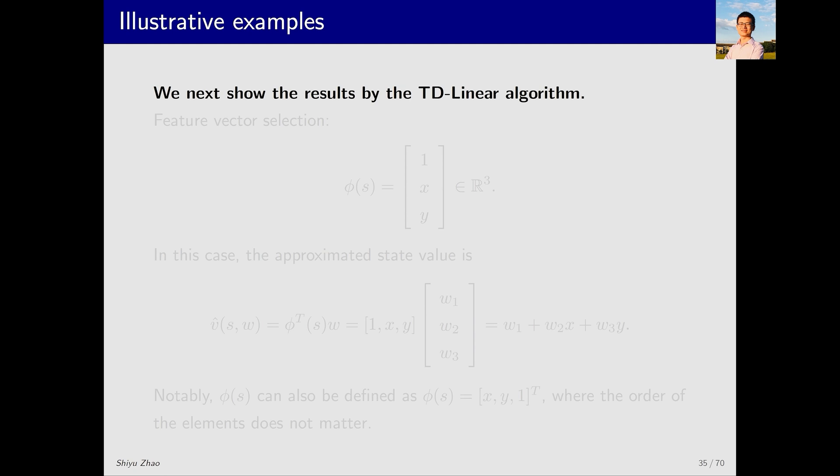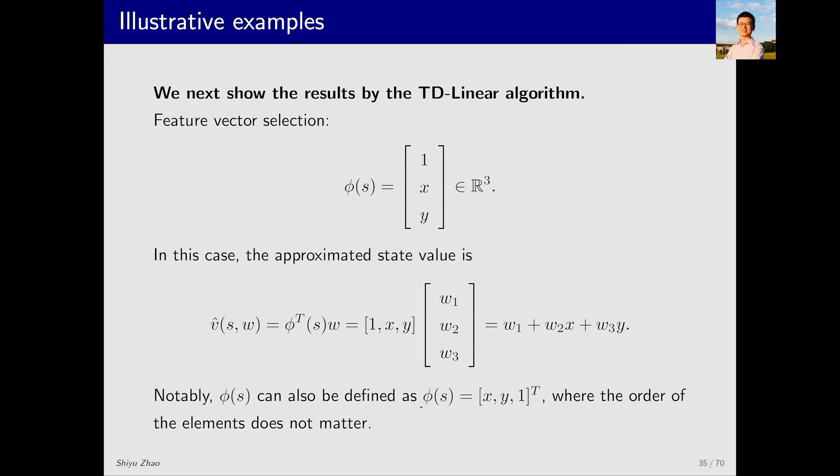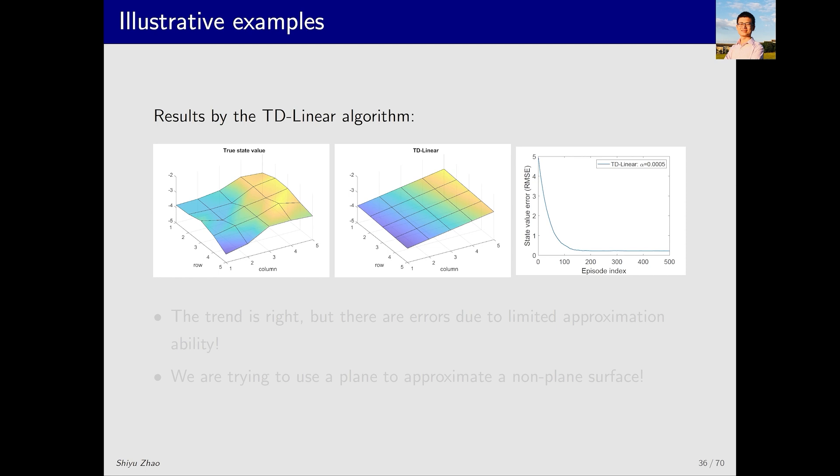Next let's see if tdLinear can also estimate the state values well. The first step in using tdLinear is to establish the feature vector. Note the idea here, as I mentioned earlier we want to establish a function, and this function corresponds to a surface. The surface should fit the actual state value well. So, what is the simplest case of a function corresponding to a surface? The answer is a plane. Therefore in this case we choose the feature vector to be 1, x, y. Then the feature vector can be adjusted. The order of the elements doesn't matter.